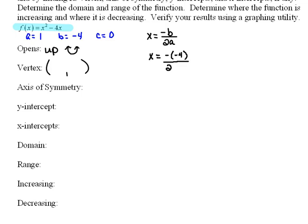over 2 times a, which is 1. And now we simplify. So -4, the opposite of -4 would be 4. 2 times 1 would be 2. So our x value for the vertex is 2.